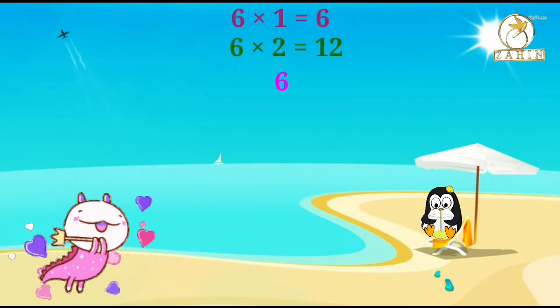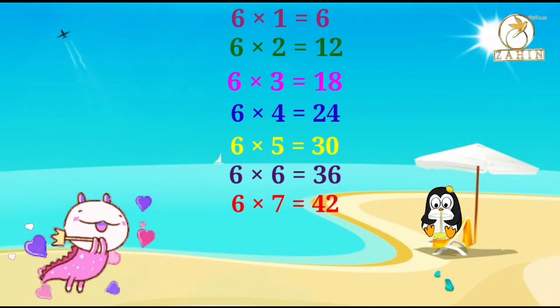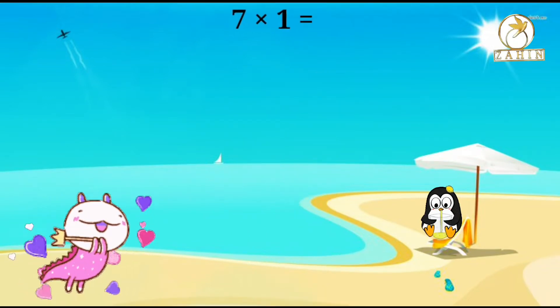6 times 2 equals 12, 6 times 3 equals 18, 6 times 4 equals 24, 6 times 5 equals 30, 6 times 6 equals 36, 6 times 7 equals 42, 6 times 8 equals 48, 6 times 9 equals 54, 6 times 10 equals 60. 7 times 1 equals 7.